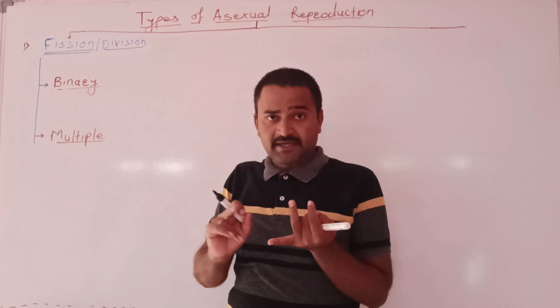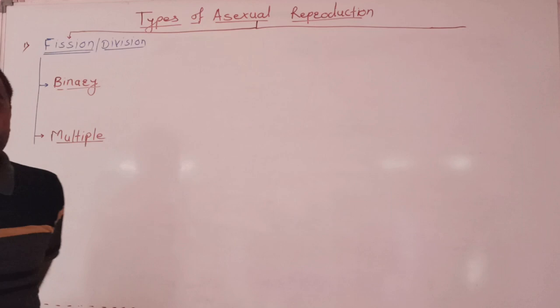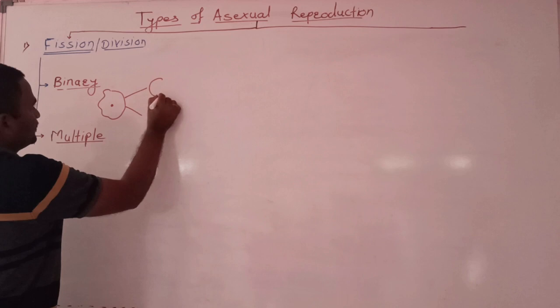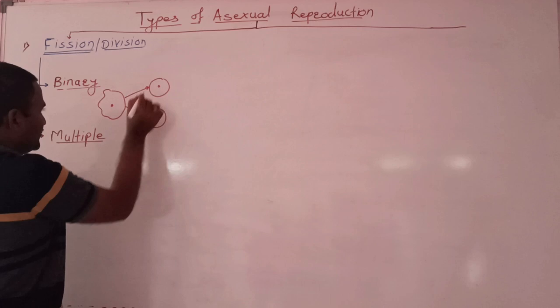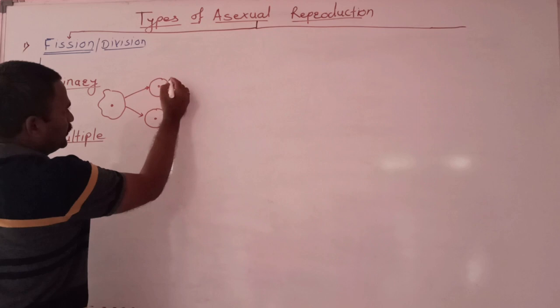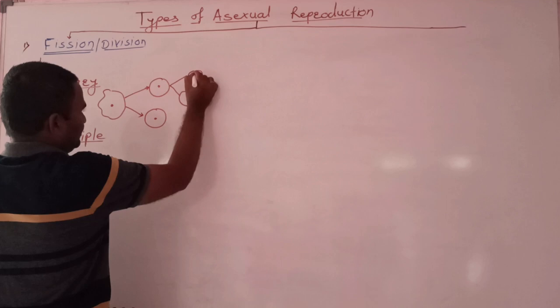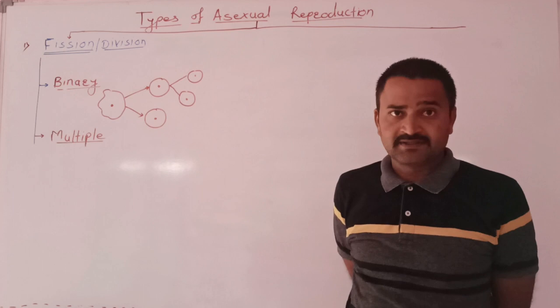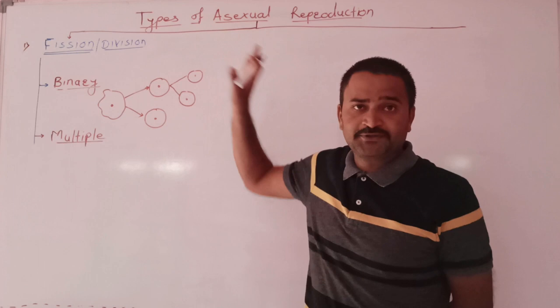This type of reproduction is commonly found among organisms like amoeba and paramecium. One parent cell divides and you can see that two daughter cells and two organisms are ready. Again, the daughter organism or newly formed organism grows and divides to form two more. The organisms which reproduce by binary fission are said to be immortal because there is no natural death of the organism.